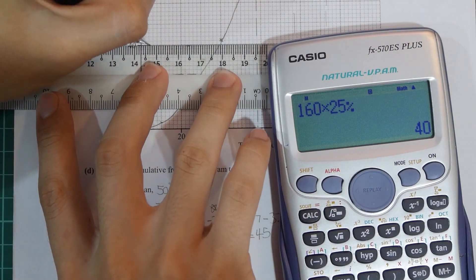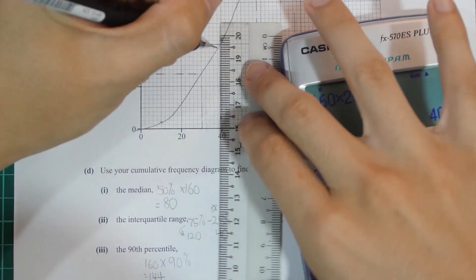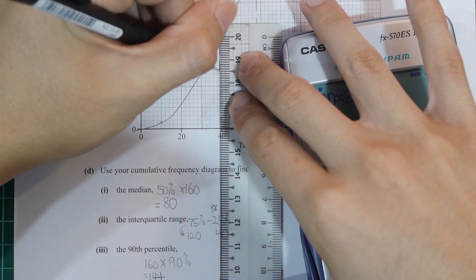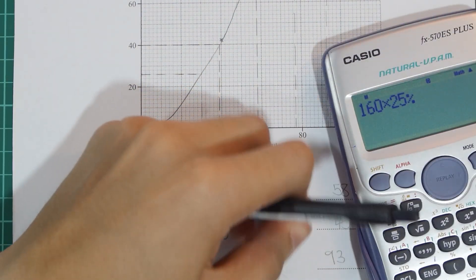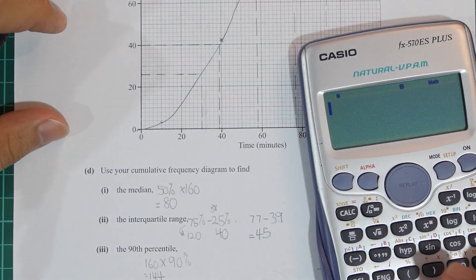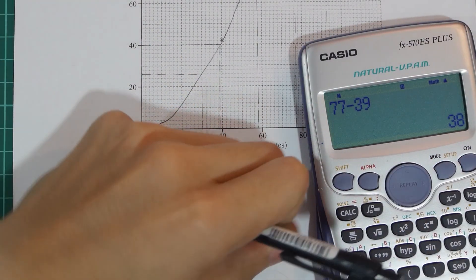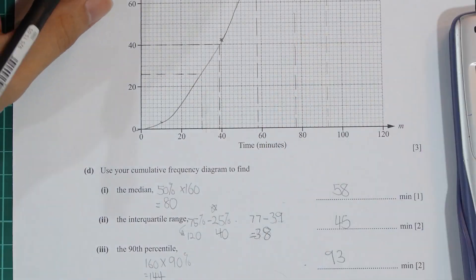After I do the correction, the line should be pointing to somewhere around 39 minutes. So you take 77 minus 39 and you end up with 38. Do avoid this kind of silly mistake at all costs.